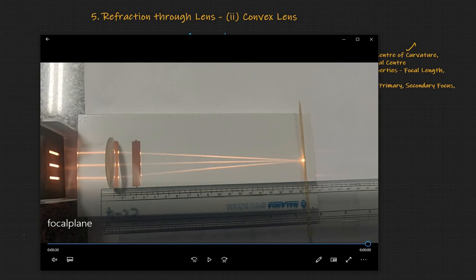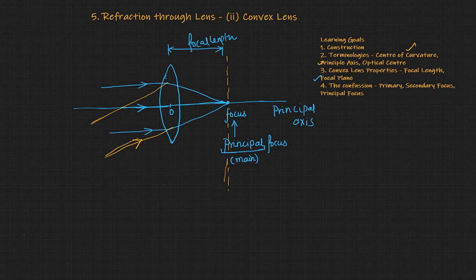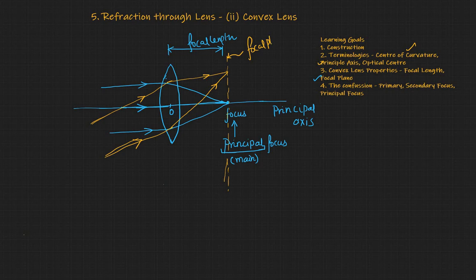Let's draw and show the idea of the focal plane. In this picture, we have rays entering at an angle but parallel to each other. They would all meet at this plane, which is a line — but really you can imagine it's a plane perpendicular into your monitor. This is called the focal plane. The focal plane is where all parallel rays meet as they pass through the convex lens.